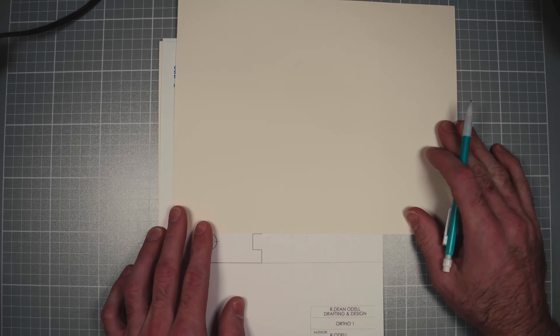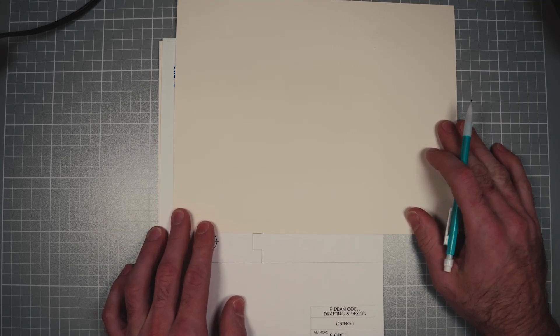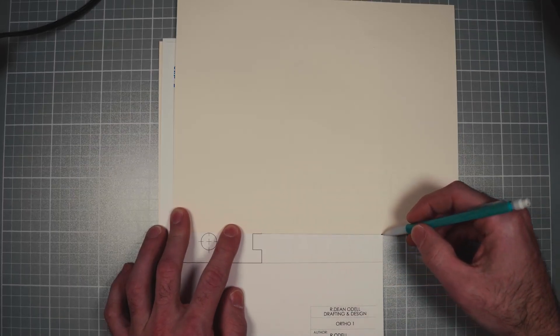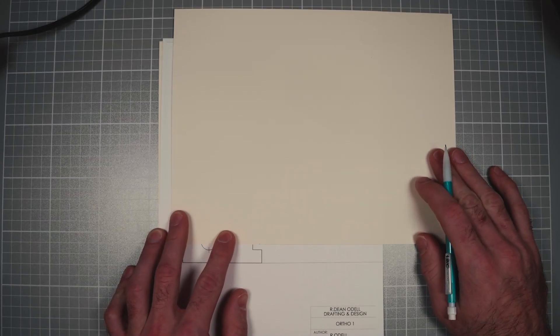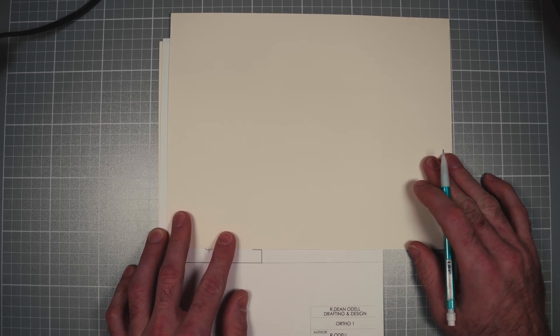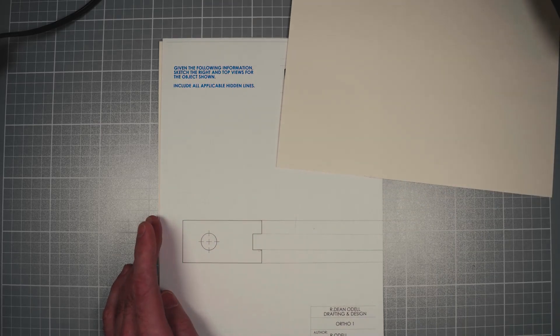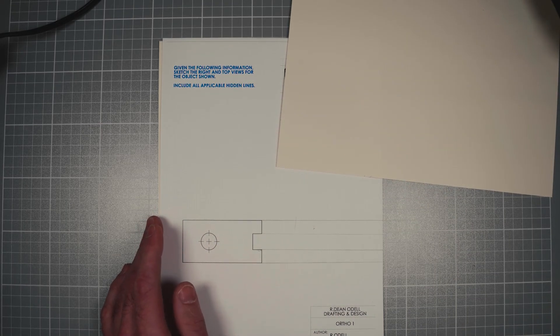And I'll draw another projection line. Now I need a projection line coming from this little feature right here, because that's gonna show up on the right view. And I'll do another one from this feature. So that's all the projection lines we need for the right view.